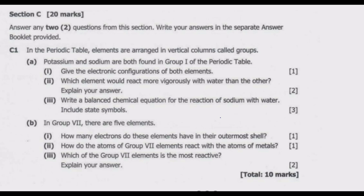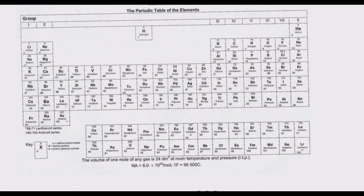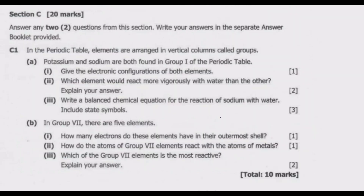In the periodic table, elements are arranged in vertical columns called groups. Potassium and sodium are both found in group one of the periodic table. Roman numeral one: give the electronic configurations of both elements. We go to the periodic table, where we can see sodium and potassium. We are required to give the electronic configuration as per the question.